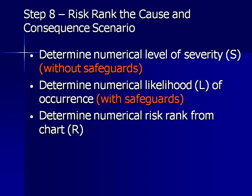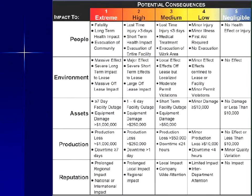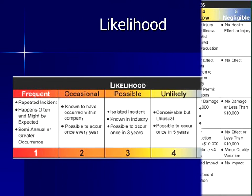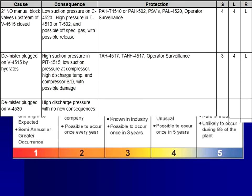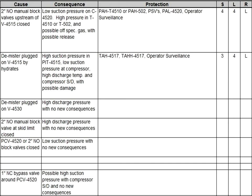In Step 8, we risk rank the cause and consequence scenario. First, we assign a numerical level of severity without safeguards. Then, we assign a numerical likelihood of the occurrence with safeguards. Then, we assign a numerical risk rank from the PHA chart. Clients will provide a PHA chart which helps us assign these numerical rankings. We rank the likelihood of the consequence as frequent, occasional, possible, unlikely, or improbable. After we have assigned severity and likelihood, a high, medium, or low risk ranking is assigned based on the client-provided risk matrix.